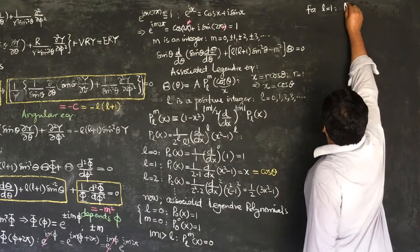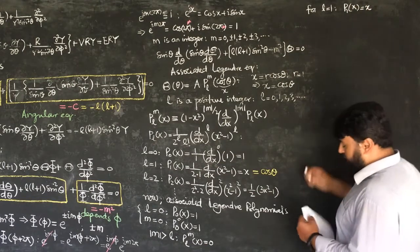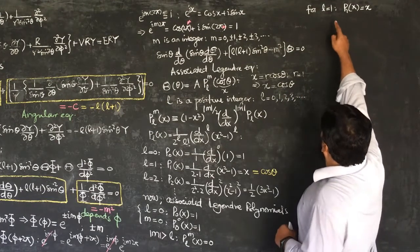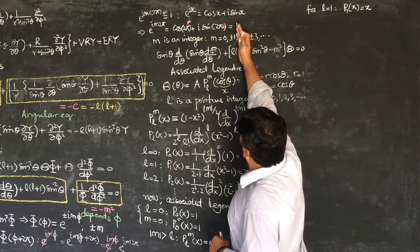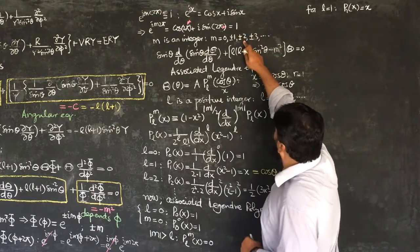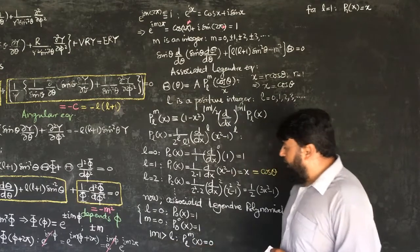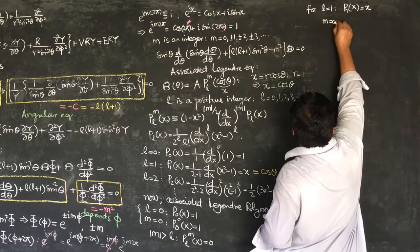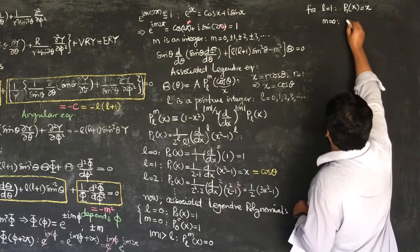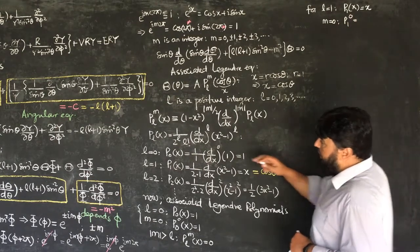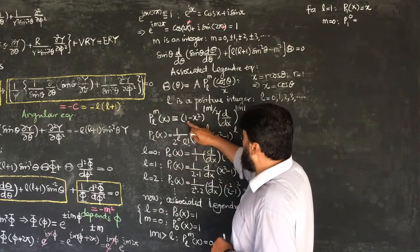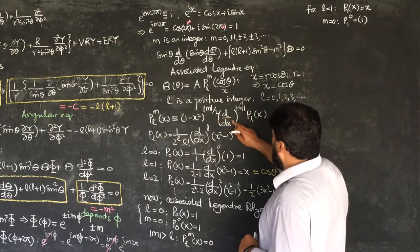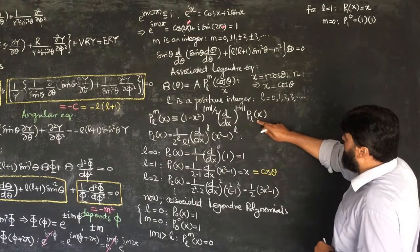For l equal to 1, we start with all possible values of m. The valid values go up to ±1, because for |m|=2 we would have m greater than l and get zero. Let's check: for m=0, we compute P_1^0. We have (1-x²)^0 = 1, d^0/dx^0 = 1, and P_1(x) = x, so P_1^0(x) = x.